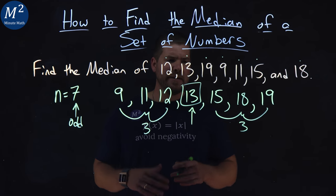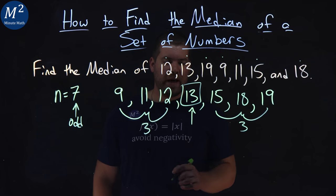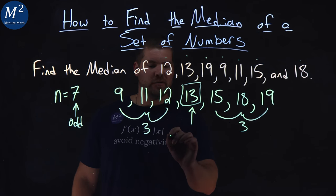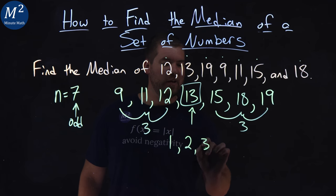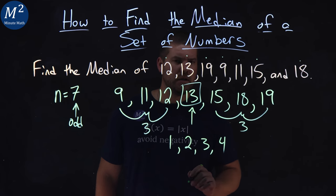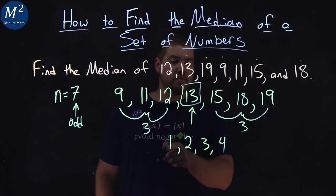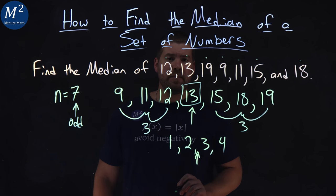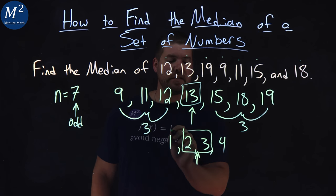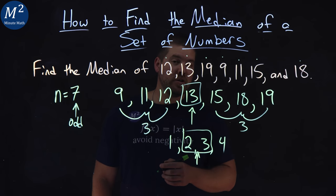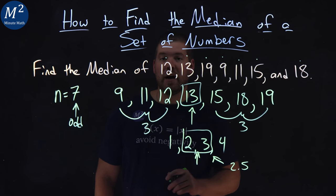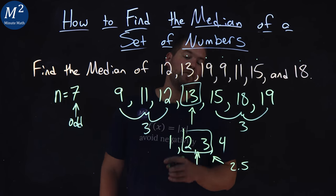Now, what happens if there was an extra number? Let's say we had 4 numbers: 1, 2, 3, and 4. If I was going to find the median of them, there are 4 numbers here, and halfway is going to be right in the middle. What you would do is take the 2 numbers on either side and find the average of the 2. In that case, it would be 2.5 — 2 plus 3 is 5, divided by 2 is 2.5. So the median would be 2.5 there.